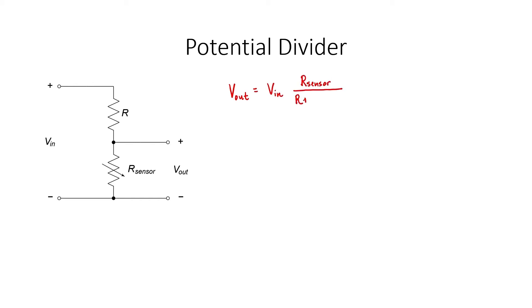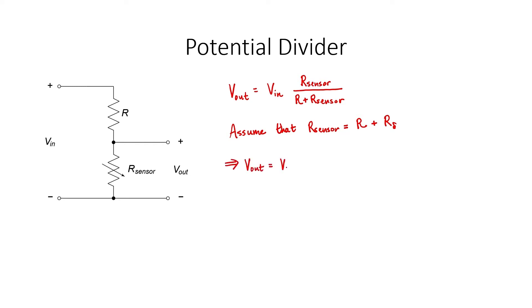Let's write the equation for the output voltage of this particular potential divider. For the sake of describing this circuit, let's assume that the nominal resistance of our sensor is just R. The real resistance that we measure is going to be R plus or minus some other resistance. Let's call the change in our sensor due to the environment R sub delta. This could be a negative number because whatever we're trying to sense might cause the resistance to go down rather than up. V_N and R are constants in this circuit.